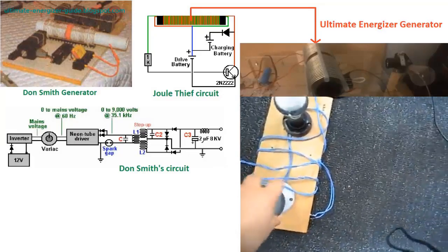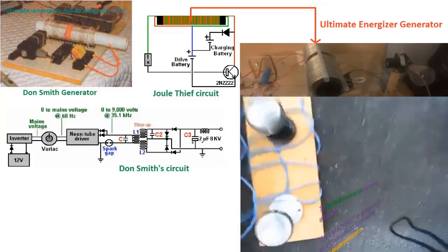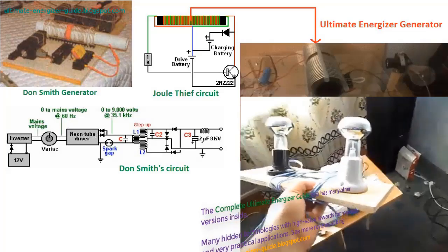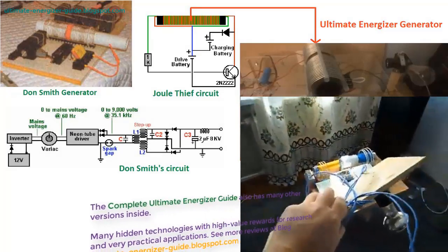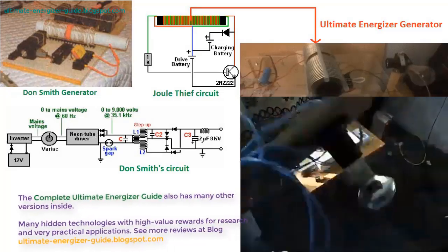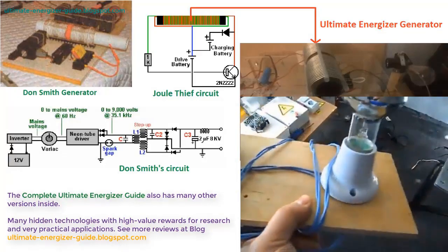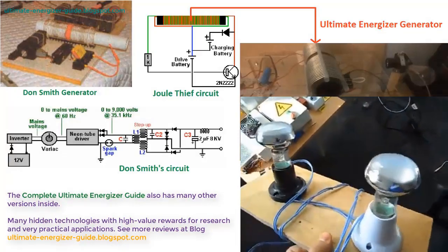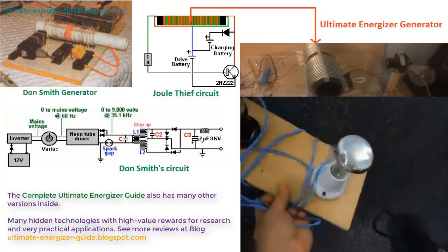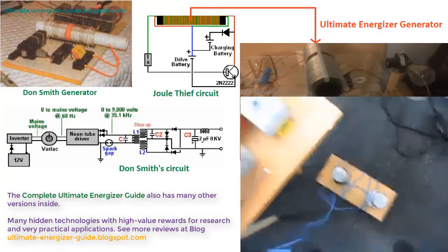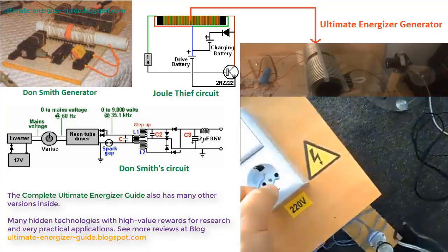The Ultimate Energizer: this technology is essentially an improvement on the Joule Thief circuit and Don Smith circuit, resulting in a unique version. The deep origin of the Ultimate Energizer generator traces back to Nikola Tesla's innovations. Tesla's invention of the bifilar coil and regulator for dynamo electrical machines is documented in the complete Ultimate Energizer guide.